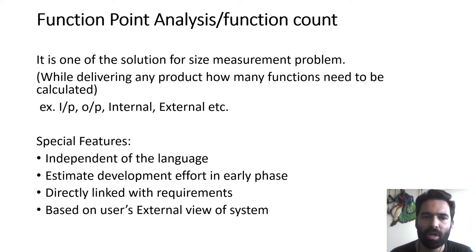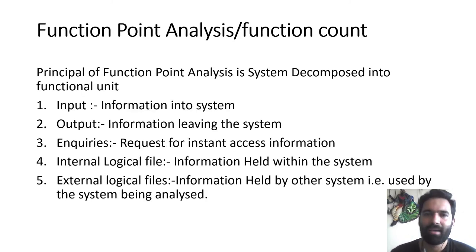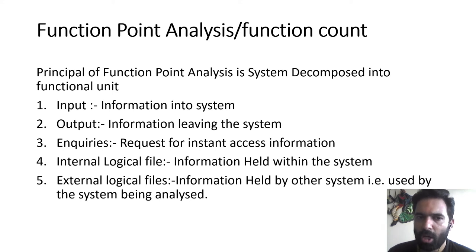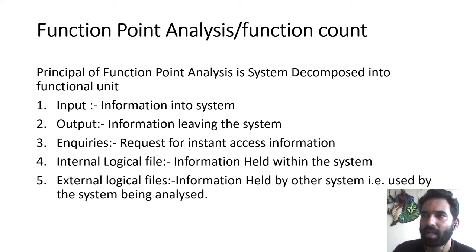Function point analysis is directly linked with the requirements. Unless we link features or function points to individual requirements, we cannot complete the particular task. It is based on the user's external view of the system — how the system is going to perform and what the output will be. The system is decomposed into functional units: input, output, inquiries, internal logical files, and external logical files. For example, in client-server communication, if a client sends a request and acknowledgement comes from the server, a communication channel is created.